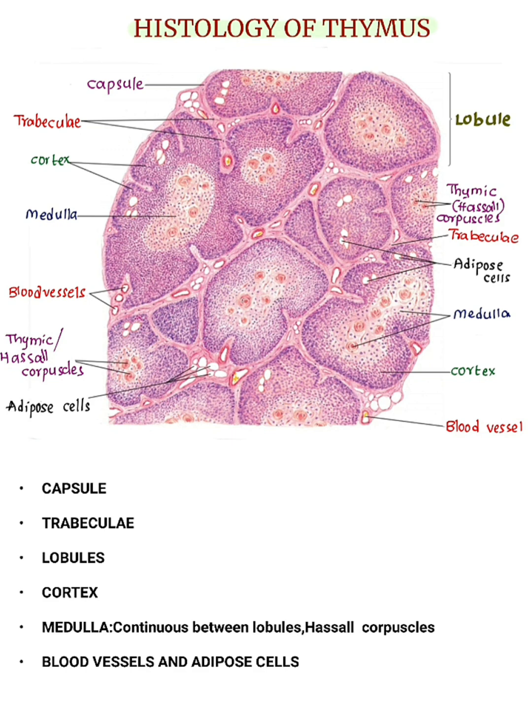The medulla also consists of numerous Hassall's corpuscles, also called thymic corpuscles, which characterize the thymus gland. Hassall's corpuscles are small, rounded or ovoid structures. These are eosinophilic structures and may exhibit calcification or degeneration centers.